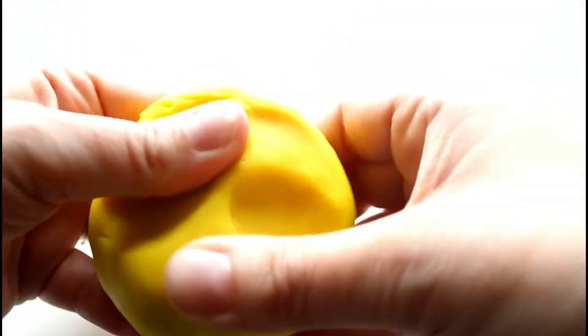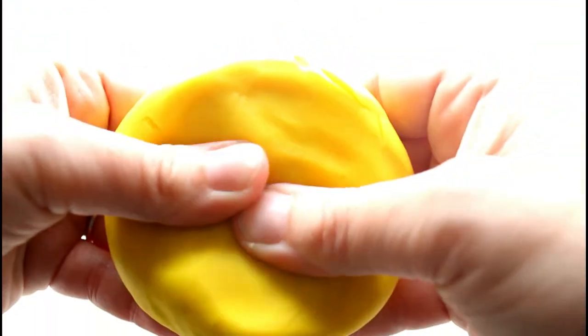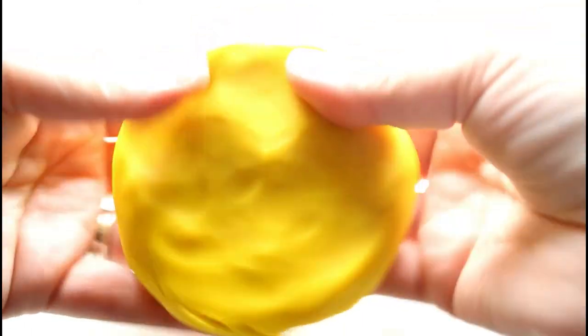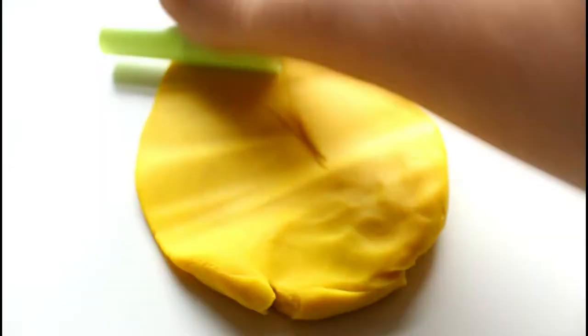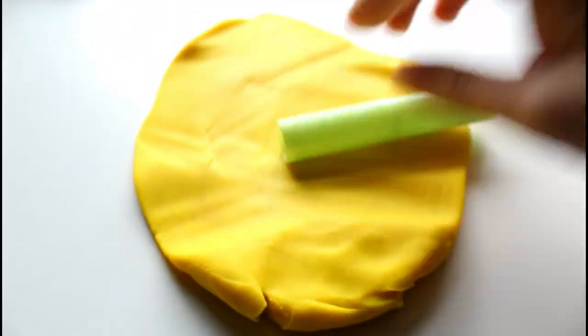We're going to use yellow play-doh for the icing, so we're gonna smooth it out with our fingers as much as possible.